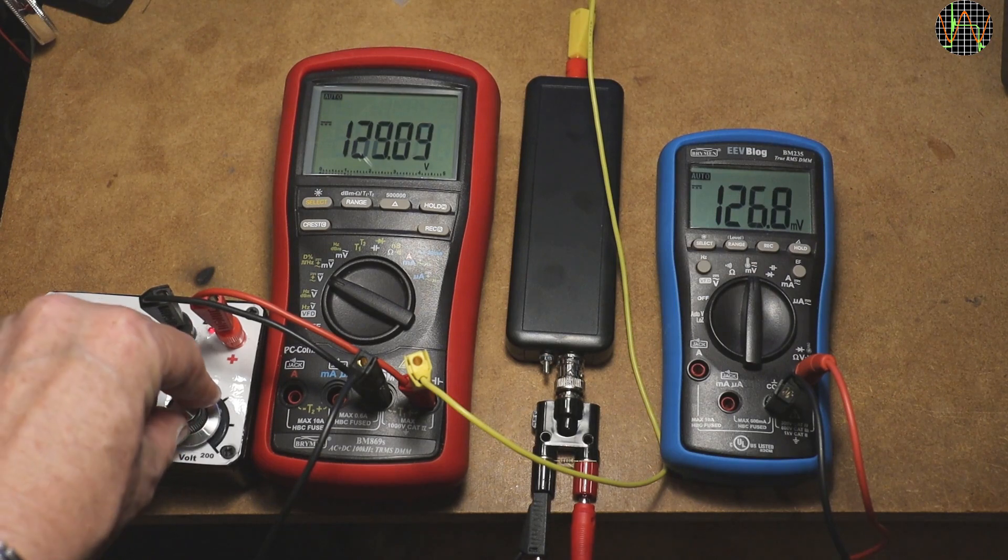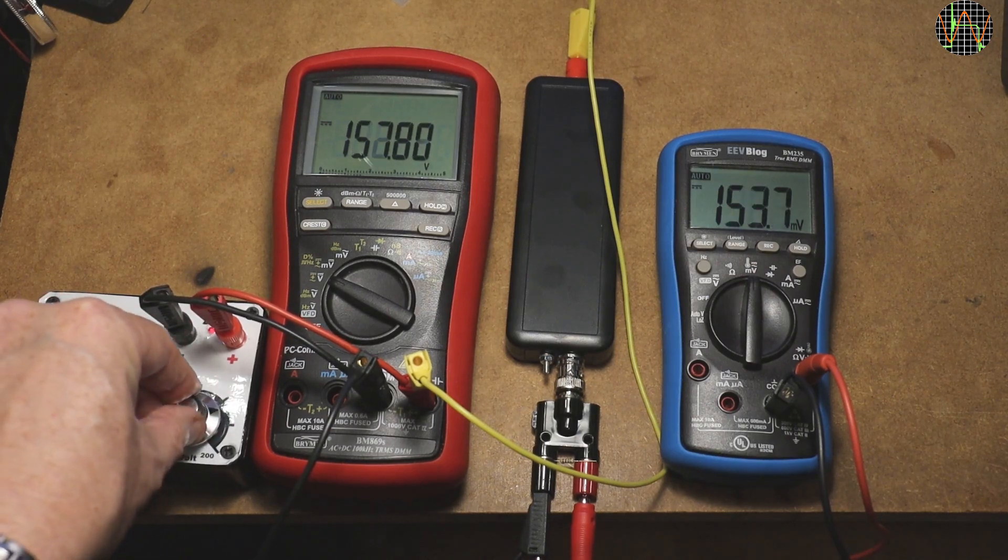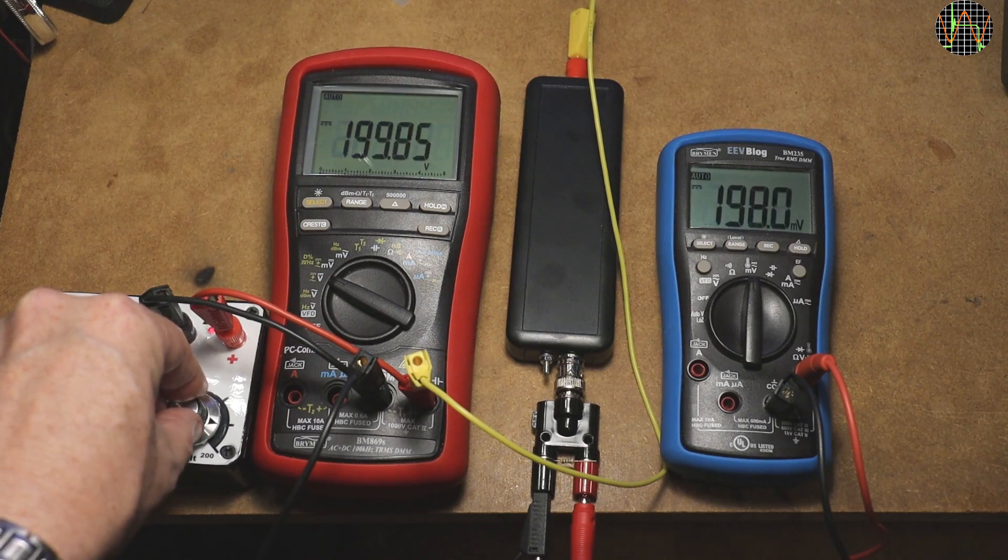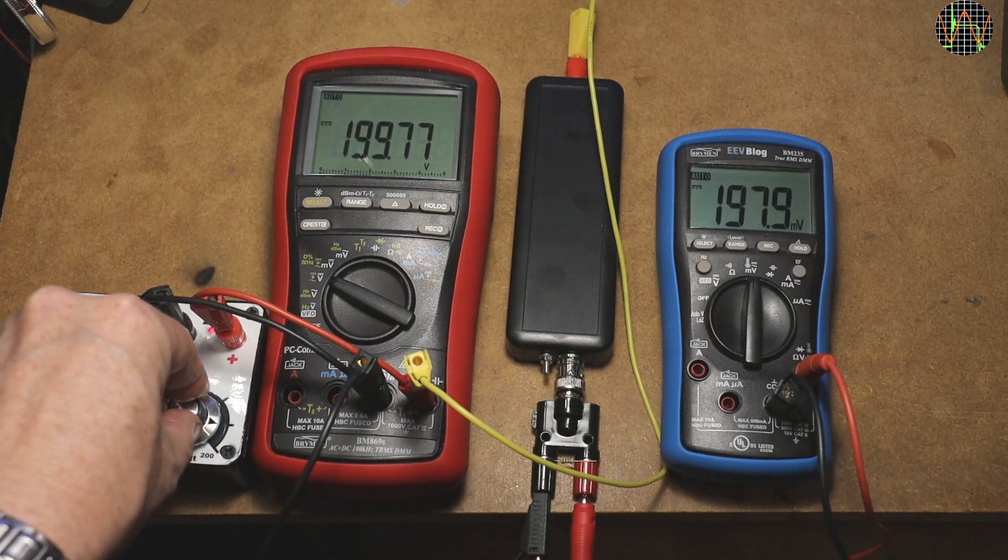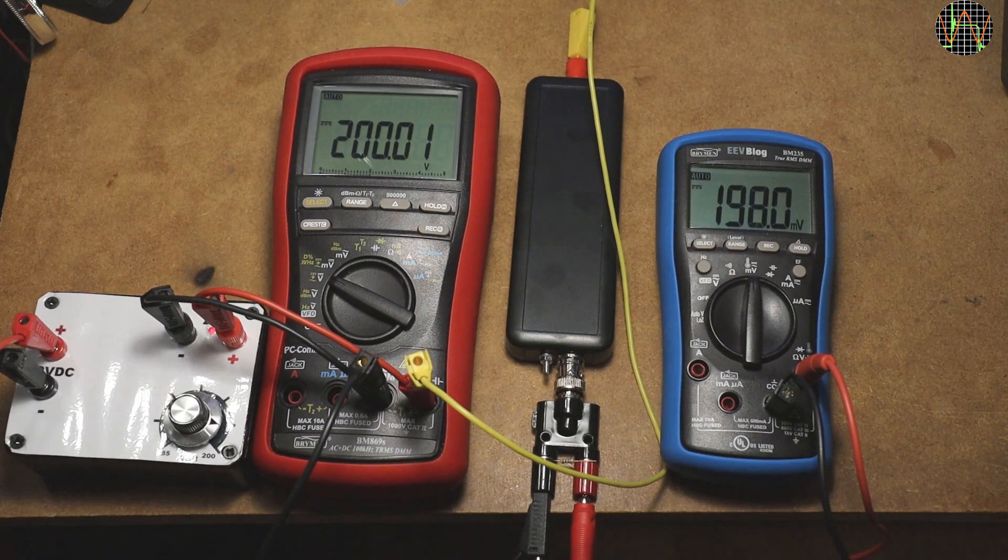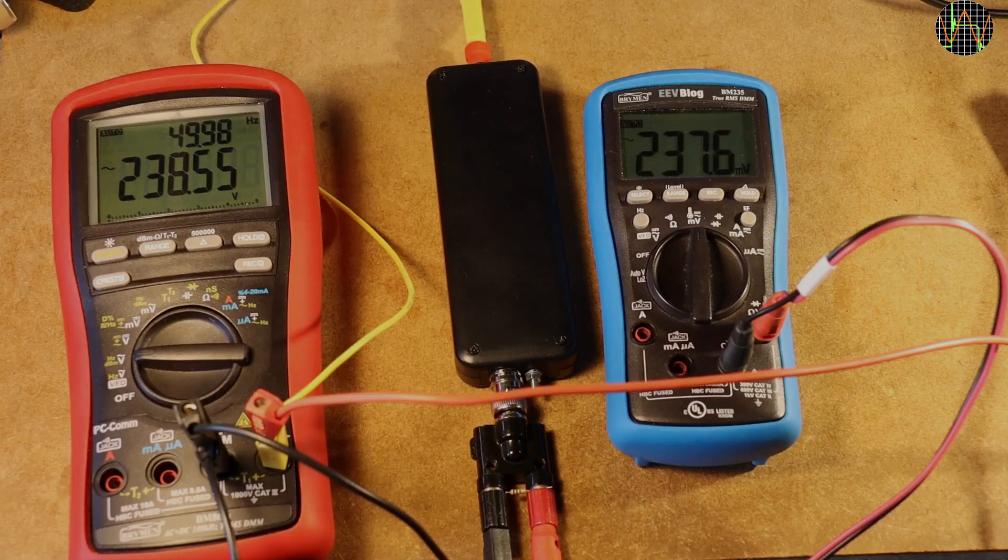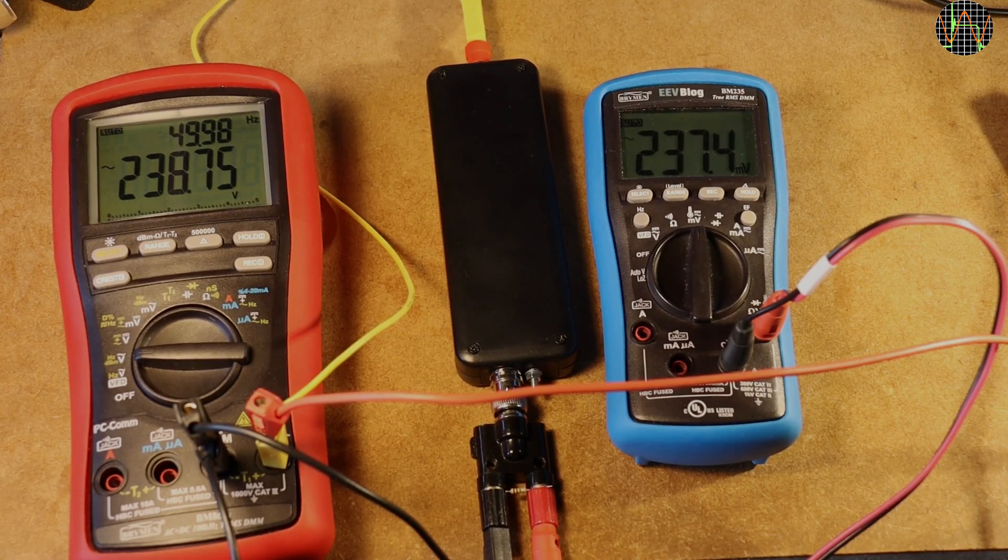Let's crank the voltage up a bit. At 200V we get 189mV, again 1% off.